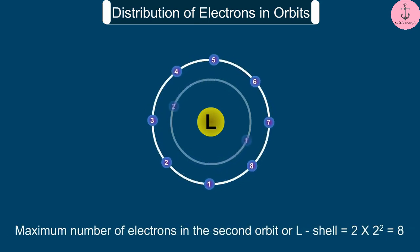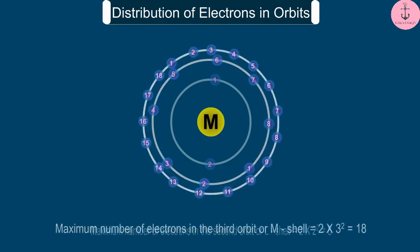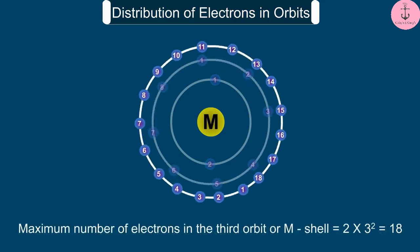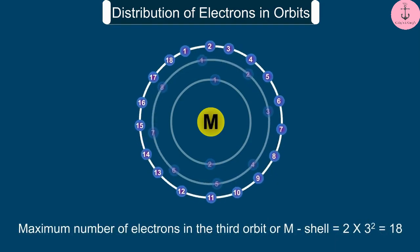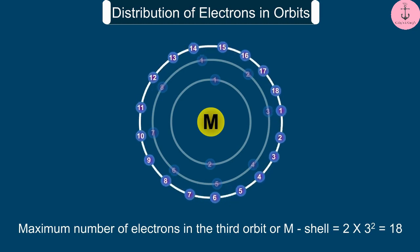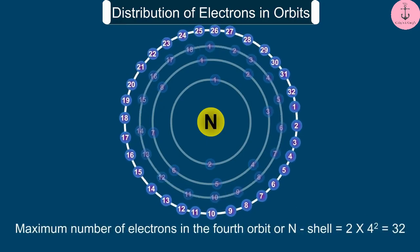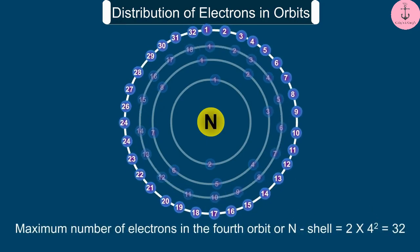In the second orbit, or L shell, is equal to 2 into 2 square, that is 8. The third orbit, or M shell, is equal to 2 into 3 square, that is 18. The fourth orbit, or N shell, is equal to 2 into 4 square, that is 32.